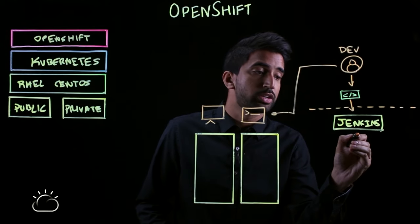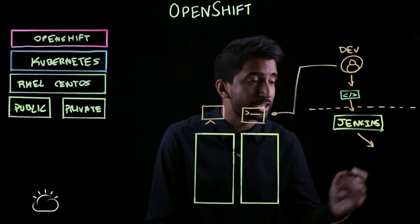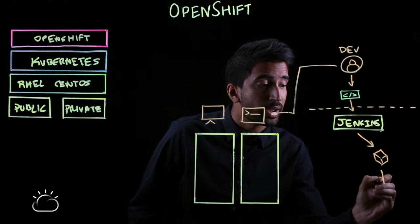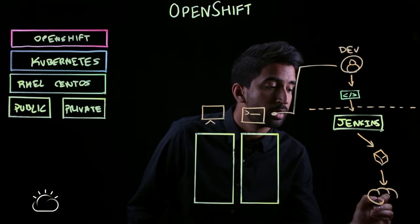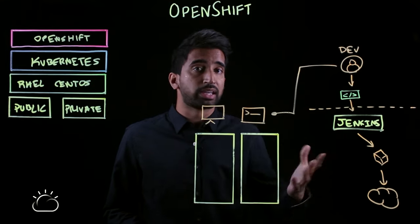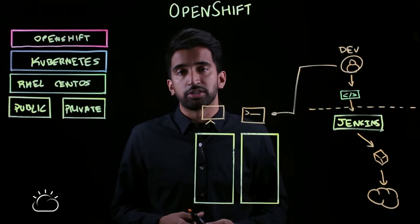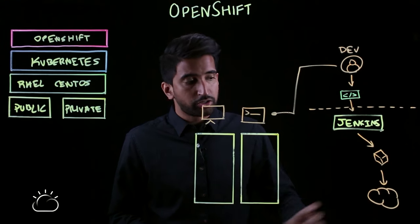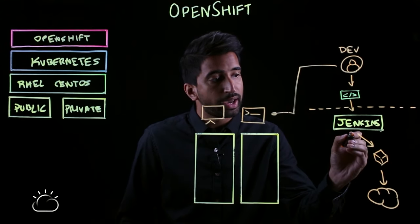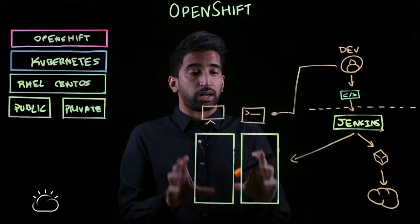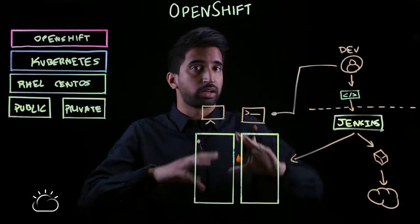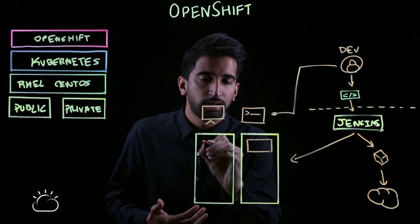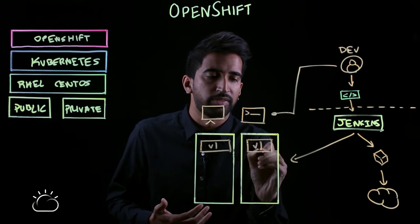The Jenkins job is going to do two things. First, it's going to do something called source-to-image, which is going to create a Docker image out of that source code. Next, it's going to take that and put it into a registry — a private registry — which comes built-in in OpenShift. You can also use public registries or your own registry outside of this context as well. Once that image gets built and pushed into that registry, OpenShift will go ahead and push that into the actual cluster. We've got two hosts in our cluster in OpenShift, and let's say that we've set it up to deploy two times. We'll call this v1 of the application.